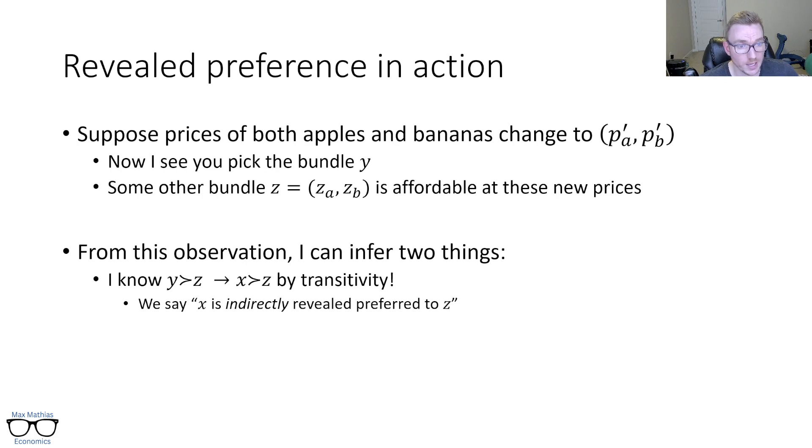So this is a way of saying X is indirectly revealed preferred to Z. I'm not directly comparing whether you pick X or Z. Z might not be affordable in your first budget line, and I'll even draw it so that it isn't. So it's hard to actually compare those two until we get this price change. And I see you pick Y. Then I know we didn't directly compare X to Z, but I'm going to say indirectly you like X more than Z because of transitivity.